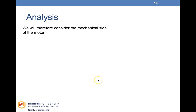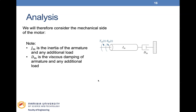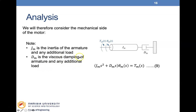We consider the mechanical side of the motor: the motor drives a load with inertia Jm (the inertia of the armature plus any additional load) and Dm (viscous damping of the armature plus any additional load). Writing the rotational mechanical system equation: (Jm·S² + Dm·S)·θM(S) = TM(S), which is equation nine.